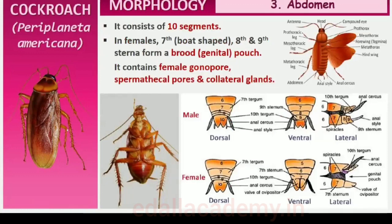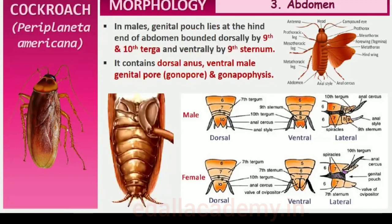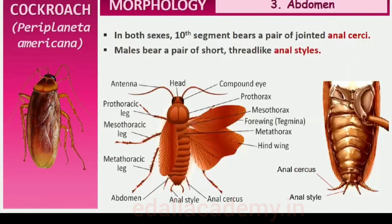The abdomen in both males and females consists of 10 segments. In females, the 7th sternum is boat-shaped and together with the 8th and 9th sternums forms a brood or genital pouch whose anterior part contains the female gonopore, spermathecal pores and collateral glands. In males, the genital pouch lies at the hind end of the abdomen, bounded dorsally by the 9th and 10th terga and ventrally by the 9th sternum, containing the dorsal anus, ventral male genital pore and gonapophyses. Males bear a pair of short thread-like anal styles absent in females. In both sexes, the 10th segment bears a pair of jointed filamentous structures called anal cerci.